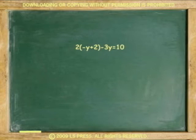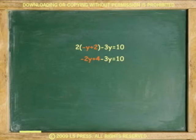Solving for y: 2 times negative y plus 2 minus 3y equals 10. Multiply contents of parentheses by 2. Combine like terms negative 2y and negative 3y.